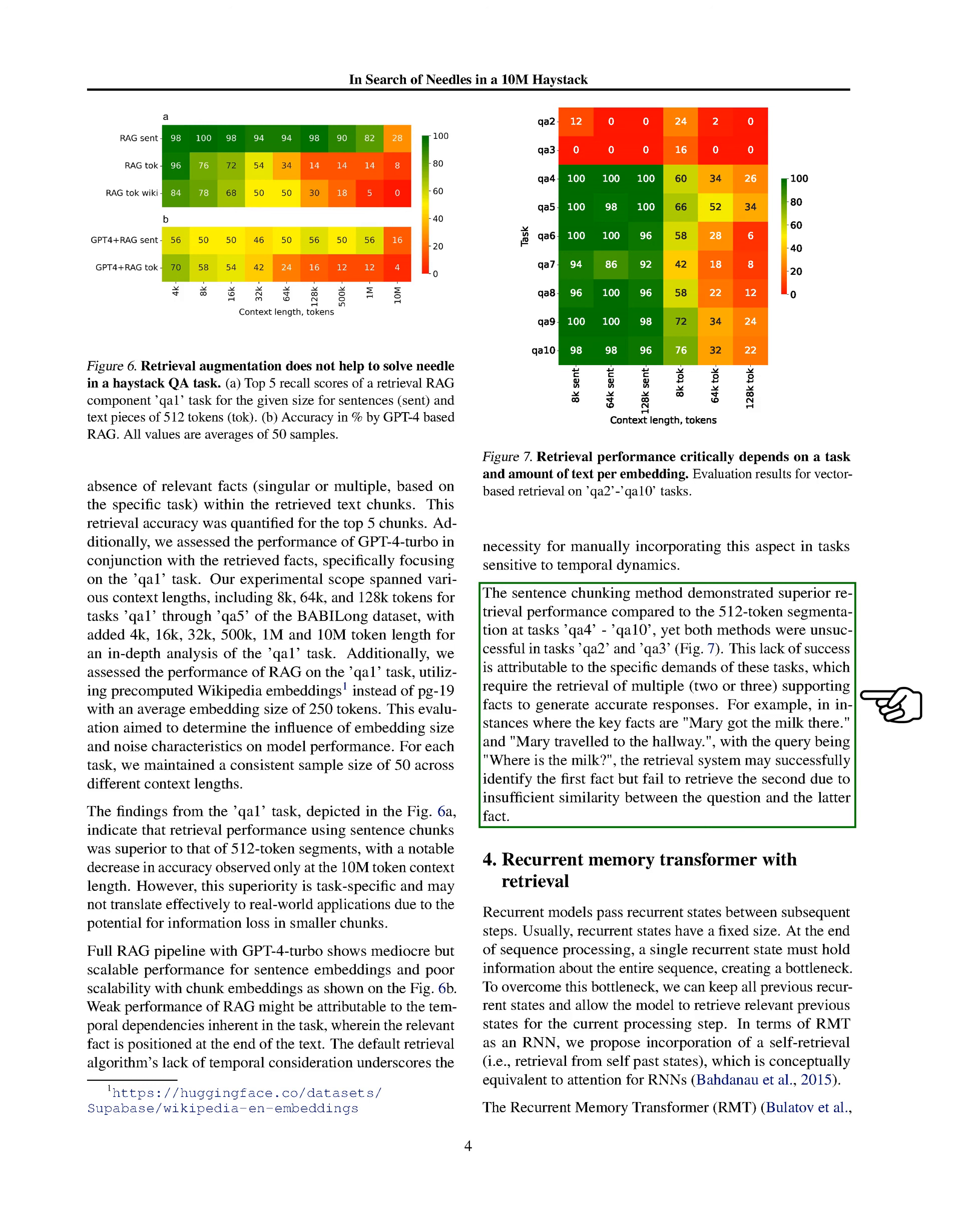In this section, we introduce a concept called the recurrent memory transformer with retrieval. Typically, in recurrent models, information from one step is passed to the next in a fixed-size package. However, this method faces a challenge because, by the end of processing a sequence, this single package needs to contain information about the entire sequence, which can lead to a bottleneck. To tackle this, we suggest keeping all previous information packages and allowing the model to pick and use the relevant ones for the current step. This approach is somewhat similar to how attention mechanisms work in recurrent neural networks, but here it's about retrieving past states.